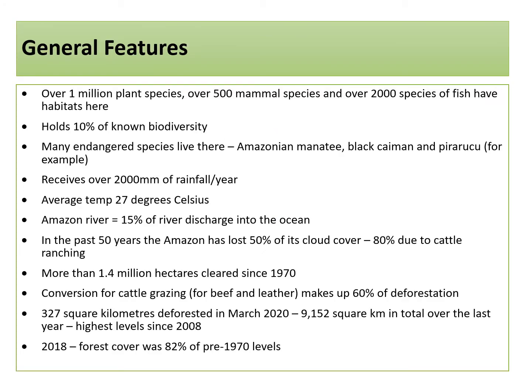General features of the Amazon rainforest. Over one million plant species, 500 mammal species and 2,000 species of fish have habitats here, meaning the Amazon rainforest holds 10% of known biodiversity. This includes many endangered species such as the Amazonian manatee, the black caiman and the piroukou. This means that protecting the Amazon is crucial in keeping these species alive for future generations. The Amazon receives over 2,000 millimetres of rainfall each year, with an average temperature of 27 degrees Celsius, making it a typical rainforest climate.